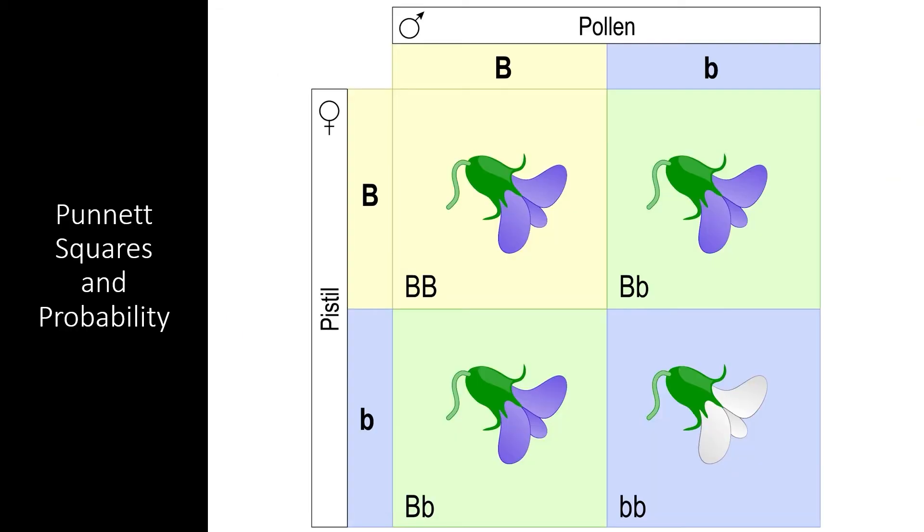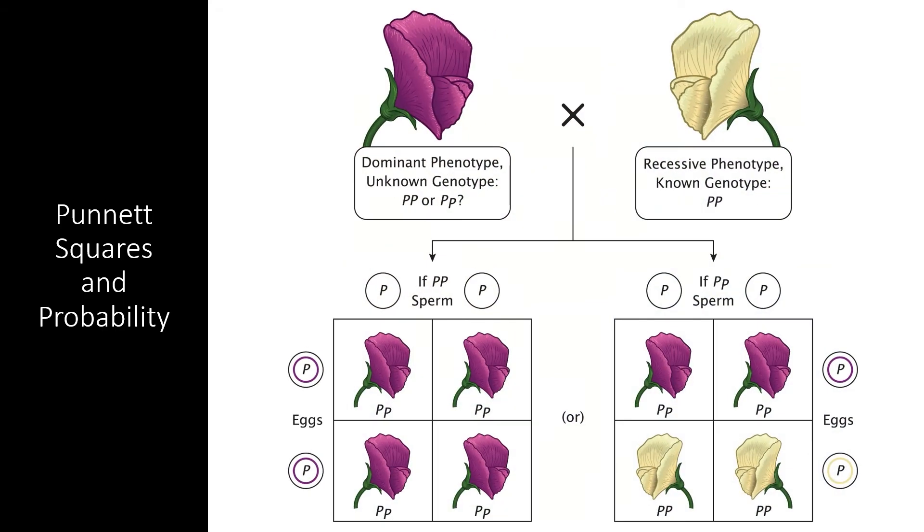Plus, the Punnett Square is an easy way to figure out which genes an unknown organism carries through a test cross. Since we always know the genotype of organisms with a recessive phenotype, we can cross a recessive phenotype with a plant that has an unknown genotype. If the offspring show the recessive phenotype, we know that the unknown genotype contained at least one recessive allele. If the offspring only show the dominant phenotype, we know that the unknown genotype was homozygous dominant.